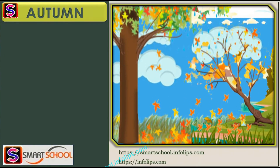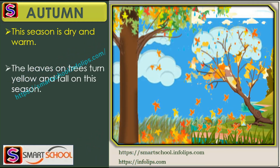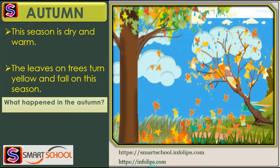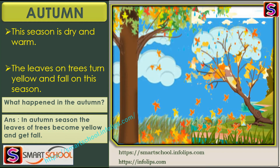The next season is autumn. This season is dry and warm. The leaves on the trees turn yellow and brown and fall from the trees. You can see in the picture how the leaves become yellow and get fall.